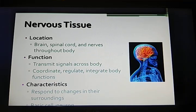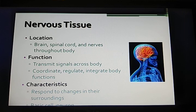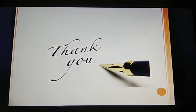The basic features and location of nervous tissue: this tissue is normally found in the brain, spinal cord, nerves, and throughout the body. Its basic function is to transfer signals. It coordinates, regulates, and integrates body functions. It responds to changes in the surroundings and creates balance in the body. So we have covered the different types of tissue. Thank you.